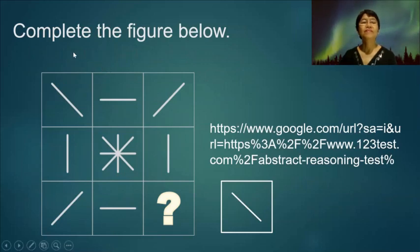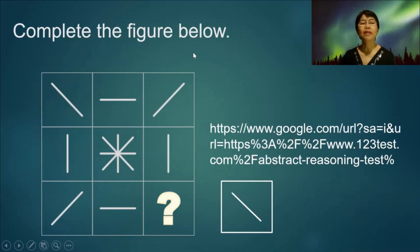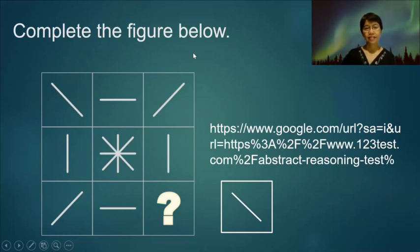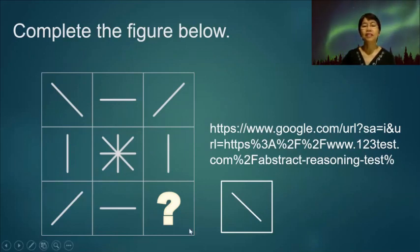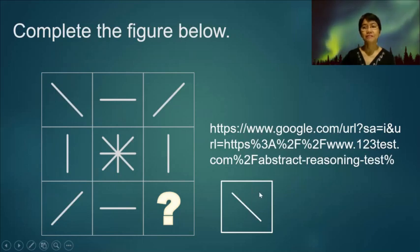We have another figure — complete the figure below. If we look at the whole figure, there is symmetry, so the missing part should be this figure to complete the symmetry.